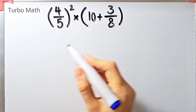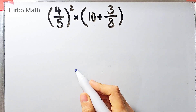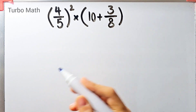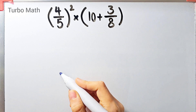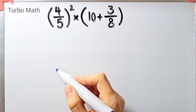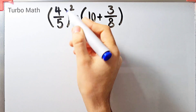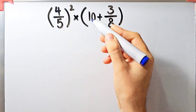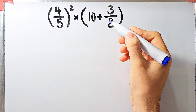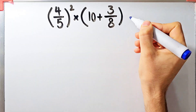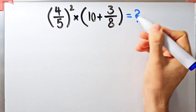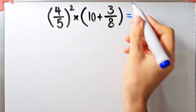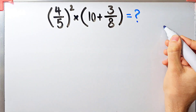Hi friends, welcome to Turbo Math channel. Many people when they see this question don't know which operation to do first, so they often make a mistake. The question is: four over five, then to the power of two, then times open parentheses 10 plus 3 over 8 closed parentheses. What is the answer?